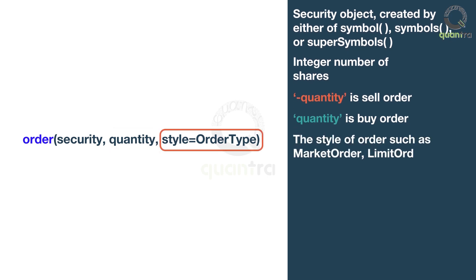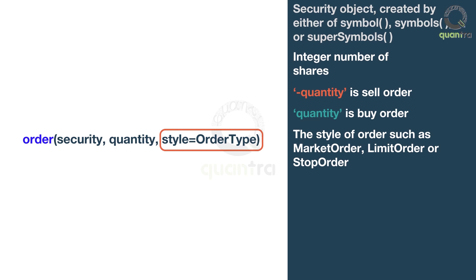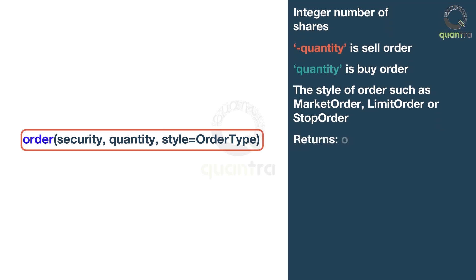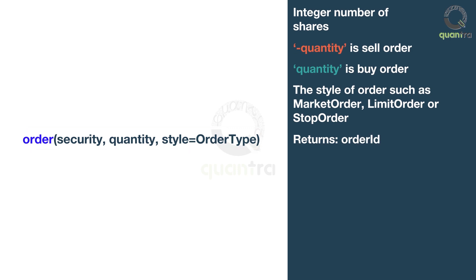The style specifies the type of the order such as market order, limit order, or stop order. When an order is successfully placed, the API returns an order ID. The status of the order is not known at the moment of placing the order, due to the aforementioned reasons.